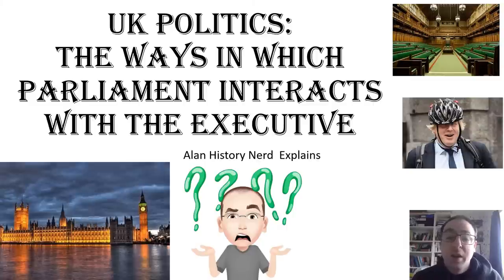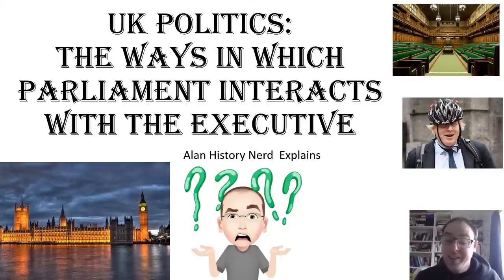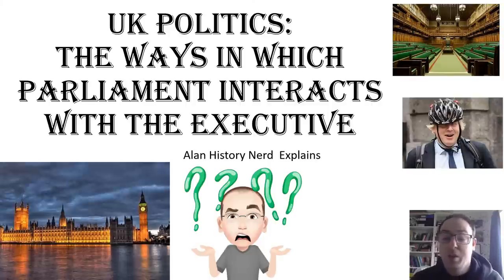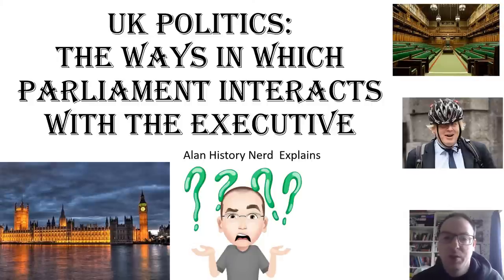Hello and welcome to Alan History Nerd. This video is going to look at the ways in which Parliament interacts with the executive. So essentially what we're really looking at here is the idea of scrutiny and how Parliament looks at what government does and tries to hold them to account, checks up on the departments, the role of ministers, and the policies and whether those policies are being carried out properly.